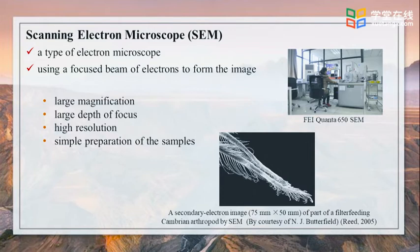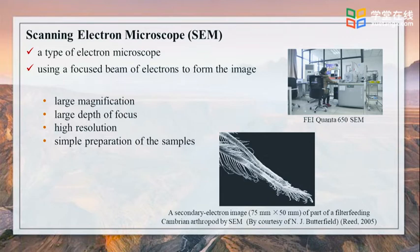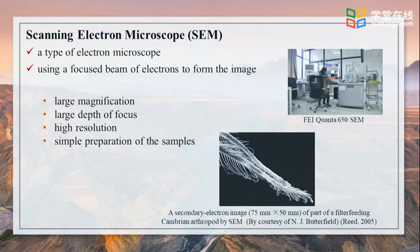For scanning electron microscope, it has a large magnification which can be up to 500,000 times. It has a large depth of focus, which allows a large amount of the sample to be in focus at one time. It produces images of high resolution with few nanometers to sub-nanometers, meaning closely spaced features can be examined at high magnification. Preparation of samples is relatively easy since most scanning electron microscopes only require the samples to be conductive. The combination of these advantages makes the scanning electron microscope one of the most heavily used instruments in research today.